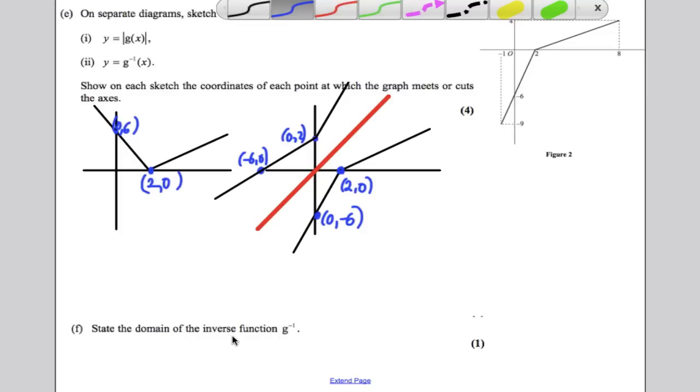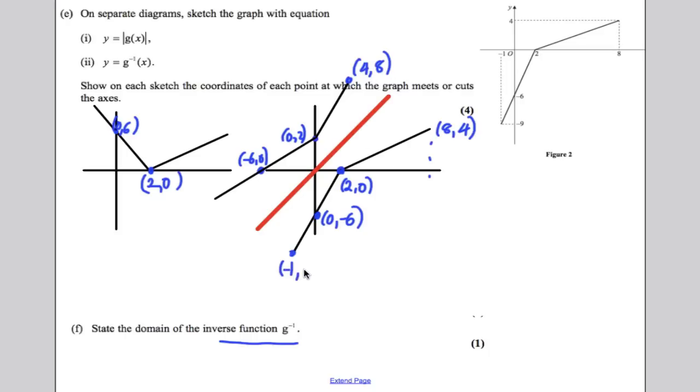Lastly, it says state the domain of the inverse function of g. Well, if you've drawn the inverse function, what x values can the inverse function take? Well, let's just have a quick look here. This one went all the way up to this coordinate here, which was 8, 4. So this one will go up to 4, 8. And it went all the way down here to negative 1, negative 9. So it will go all the way across here to negative 9, negative 1. So what x values can it take? Well, it can take any x value between negative 9 and 4. So the x values it can take, well, it can be less than or equal to 4, or it can be bigger than or equal to negative 9, and you're done.